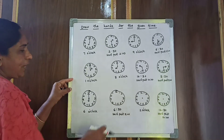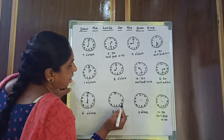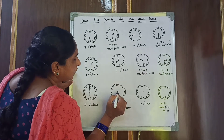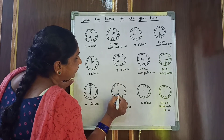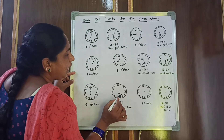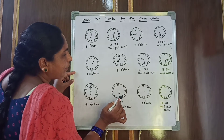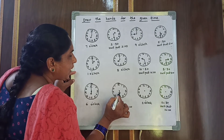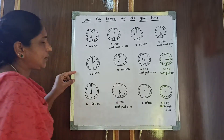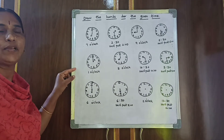Here, 6:30 or half past 6. 6 is again the hour hand — take the middle point. 30 means: 5, 10, 15, 20, 25, 30 — again both hands will come on 6. So 6:30 or half past 6. Is it clear children?